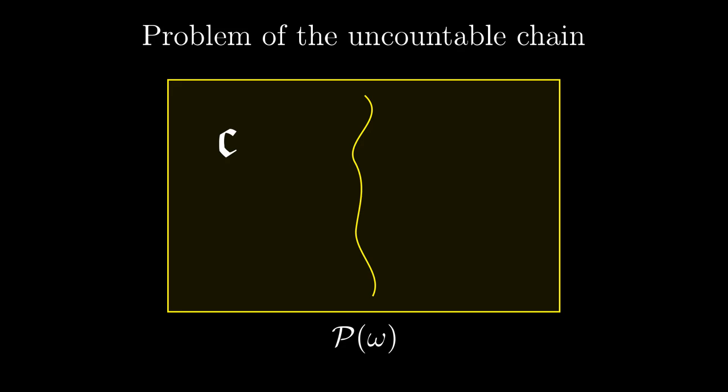Just later, I have found out that something like an uncountable chain in P(ω) occurs in mathematics quite naturally, and it is called the real line. But first things first, how could we construct a real line?